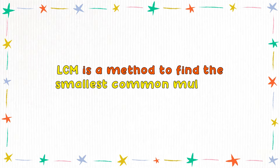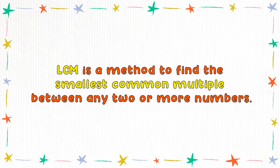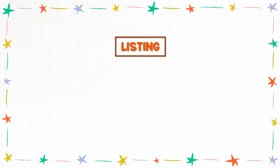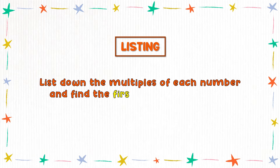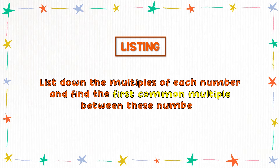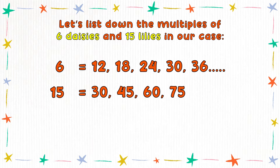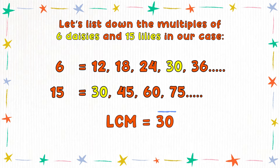Sure. LCM is a method to find the smallest common multiple between any two or more numbers. You can find the LCM using different methods. I'll tell you two of the most common methods: the listing method and the division method. Here's how the listing method works. All you have to do is list down the multiples of each number and find the first common multiple. Let's list down the multiples of 6 and 15 in our case. The first common multiple we can spot is 30, so the LCM is 30.